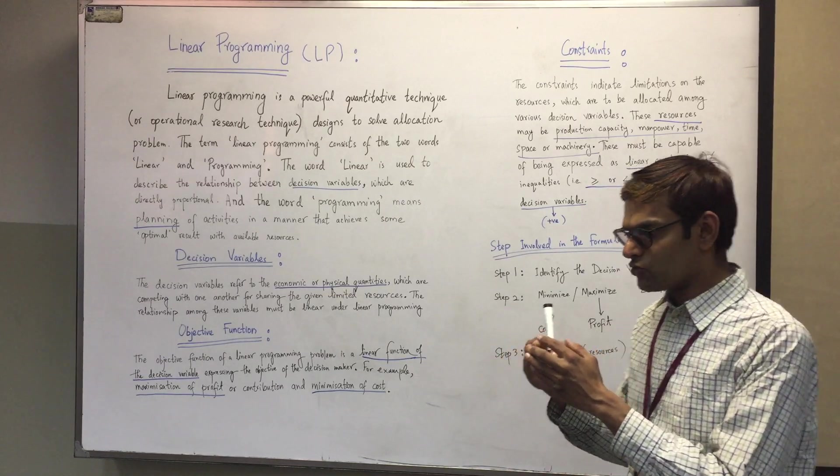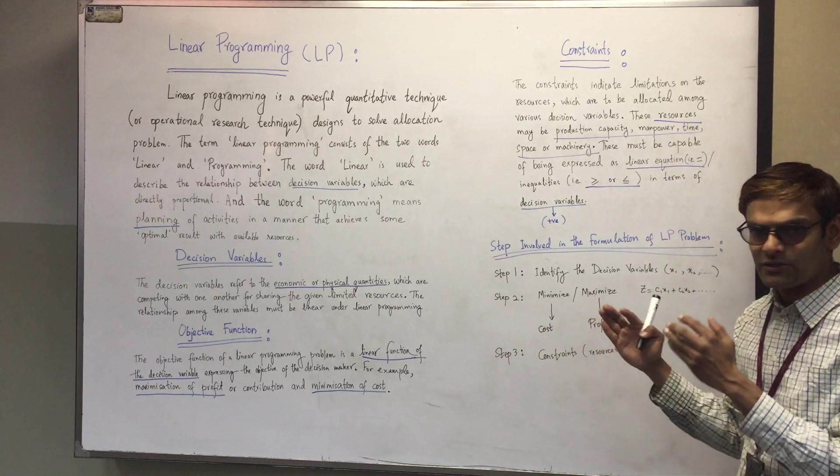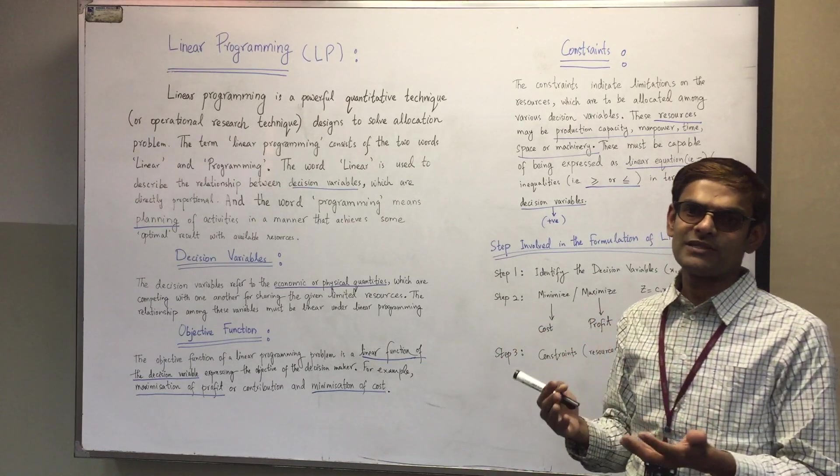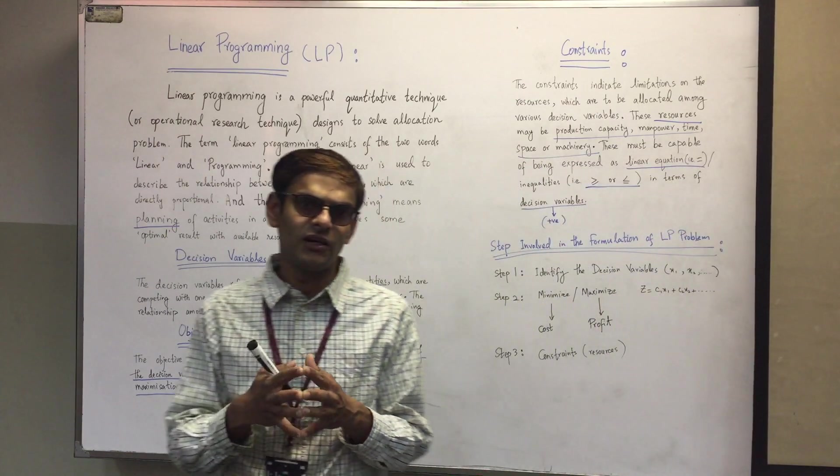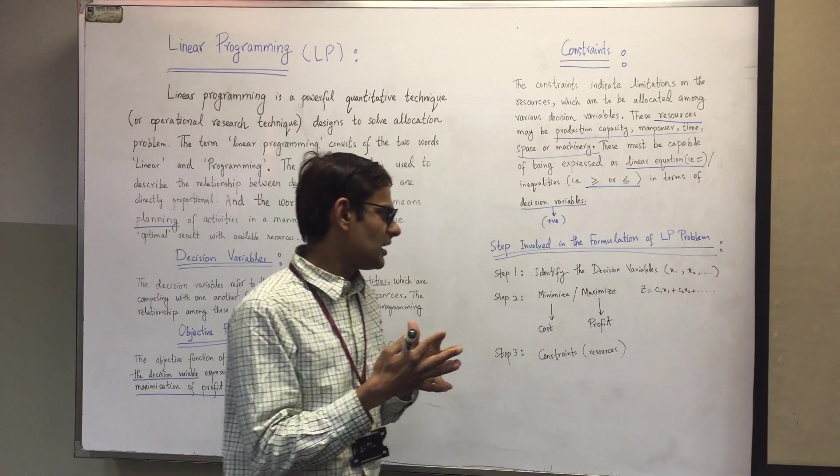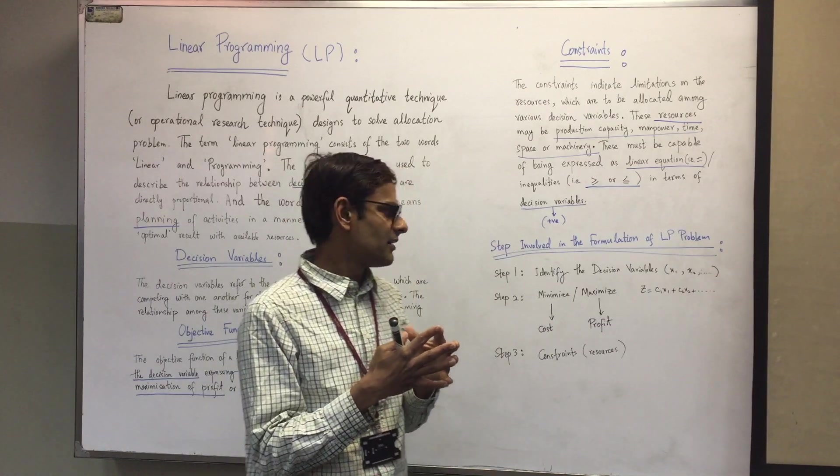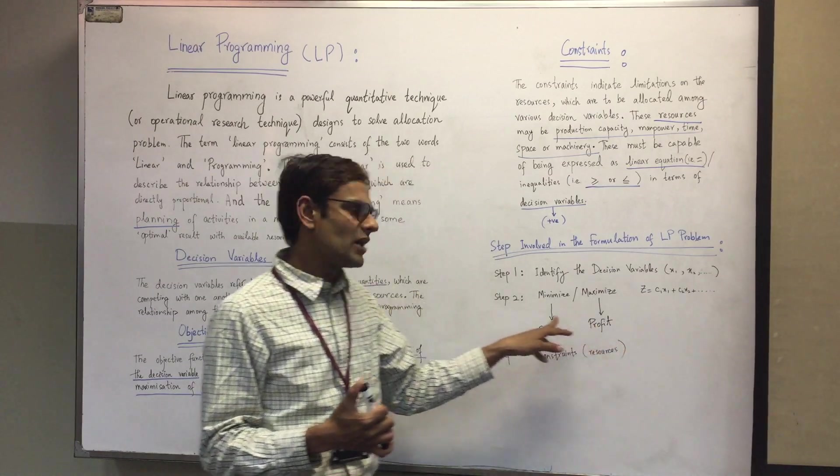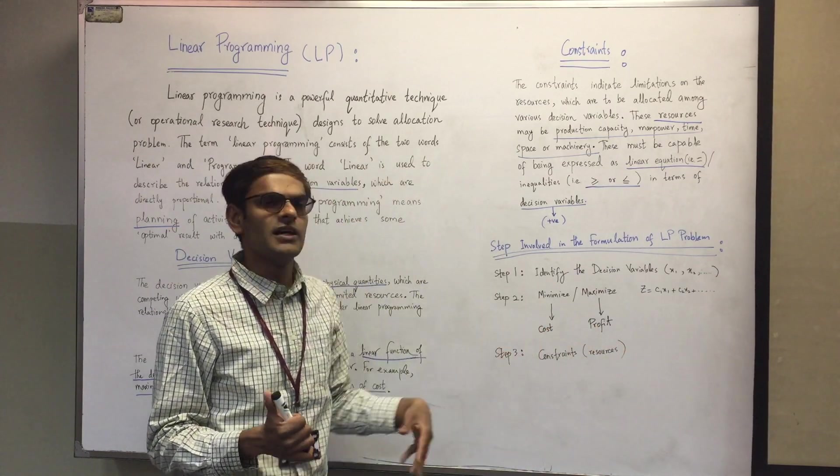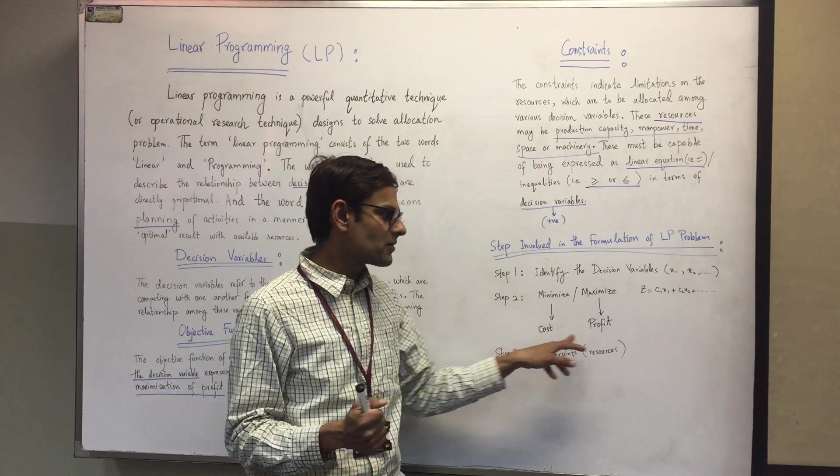In optimization, we try to minimize cost and maximize profit. In business decisions, we formulate equations to maximize profit and minimize cost, or at minimum cost, achieve maximum profit.